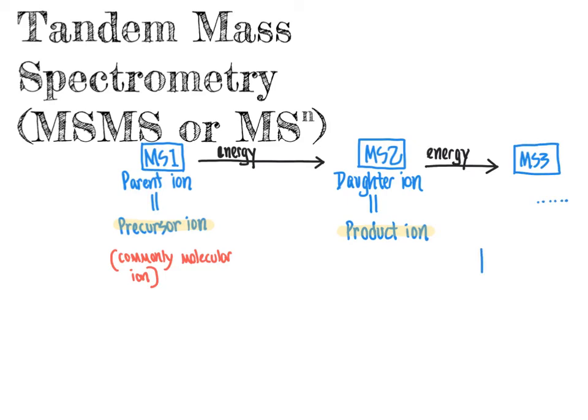So we can continue this with generating an MS3 spectrum and so on as desired. And MS superscript N, the N there is what's going to refer to what generation we are looking at in terms of the number of fragments. So the N there equals the number of generations of fragments.